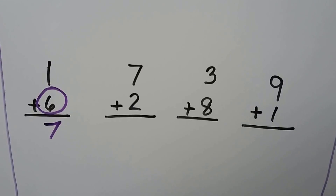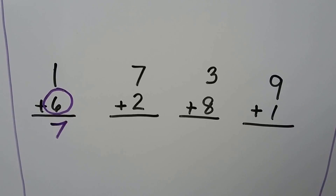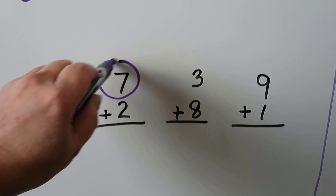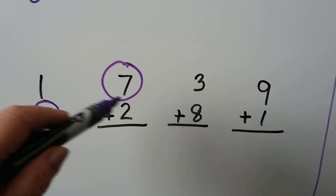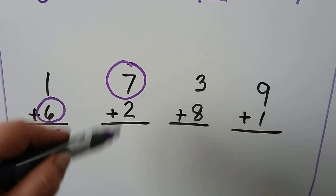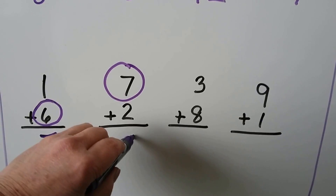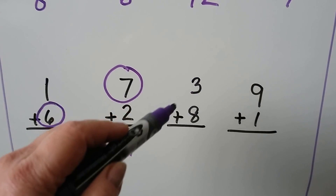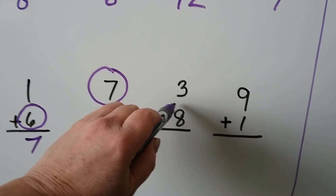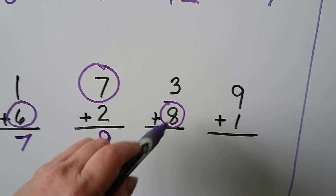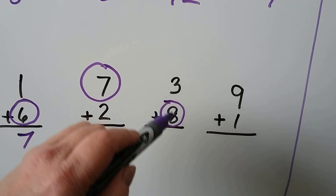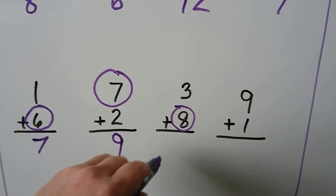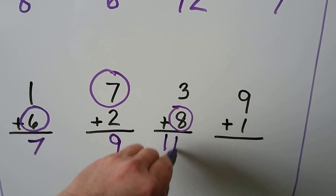6 plus 2. 7 plus 2 — 7 is the greater addend. We start with 7 and count on 2: 7, 8, 9. 7 plus 2 is equal to 9. 3 plus 8 — 8 is the greater addend. We start with the 8 and count on 3: 8, 9, 10, 11. 3 plus 8 is equal to 11.